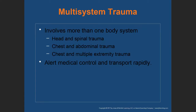Multi-system trauma involves more than one body system — combinations of head and spine, chest and abdomen. In trauma, if you suspect a chest injury, you should also suspect an abdominal injury; if you suspect an abdominal injury, suspect a chest injury as well. Alert medical control and transport rapidly.